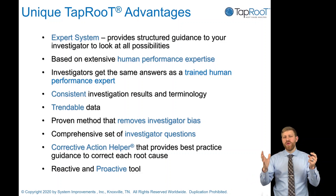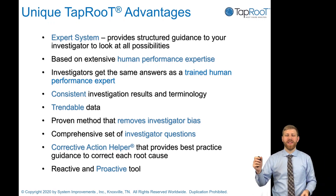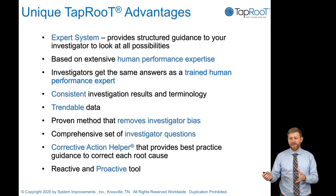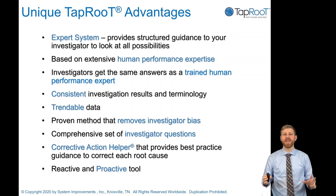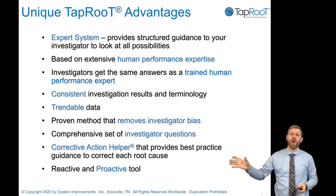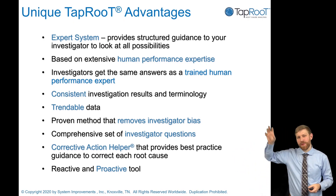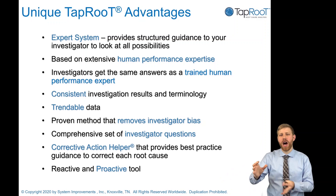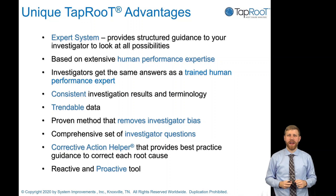Once you know the root cause, we help you find innovative and better corrective actions using the corrective action helper and the hierarchy of safeguards. Taproot is not only a reactive tool for when accidents occur — it can be a proactive tool to help prevent reoccurrence and prevent accidents before they happen by auditing and making sure your systems have the robust best practices that are out there.